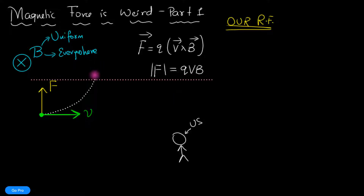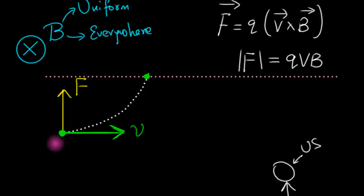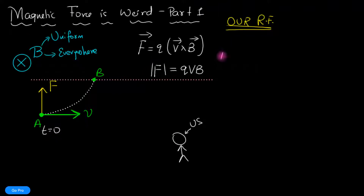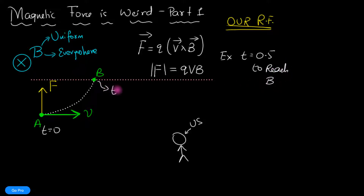I'm going to draw a reference line here. Let's call a point A and a point B. The charge at time t=0 is at A, and it takes some finite time to reach point B on the reference line. If we do the calculation, let's say it turns out it takes about 0.5 seconds to reach B — so at 0.5 seconds it crosses that reference line. This is the analysis from our reference frame.